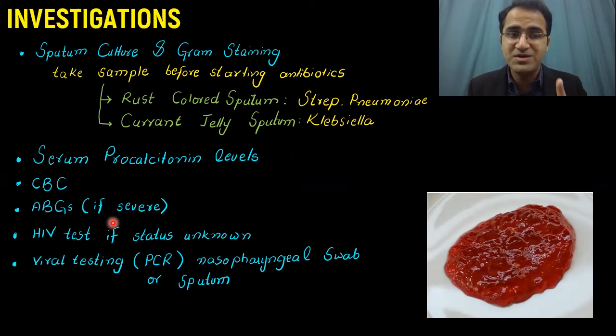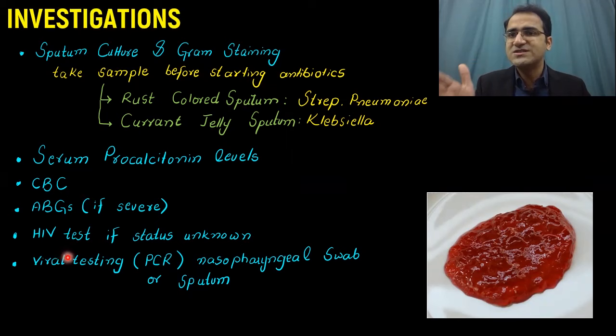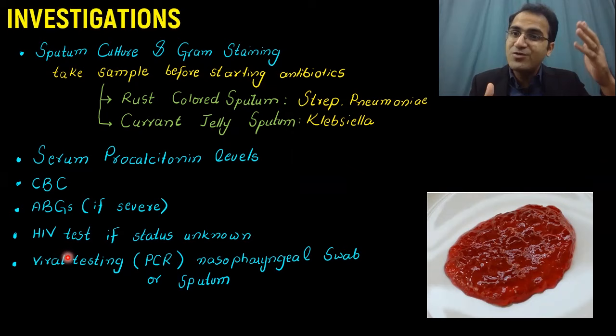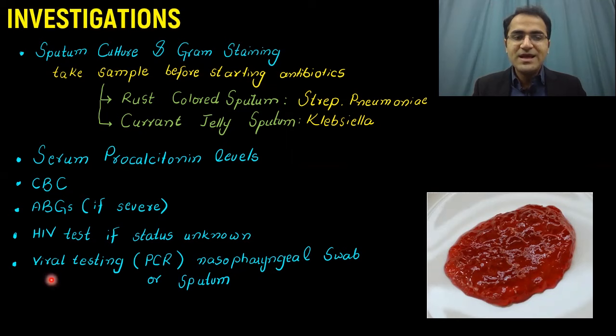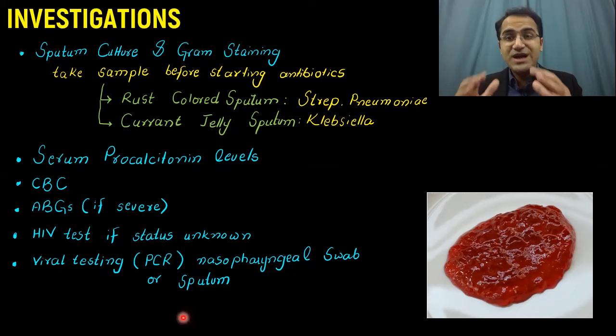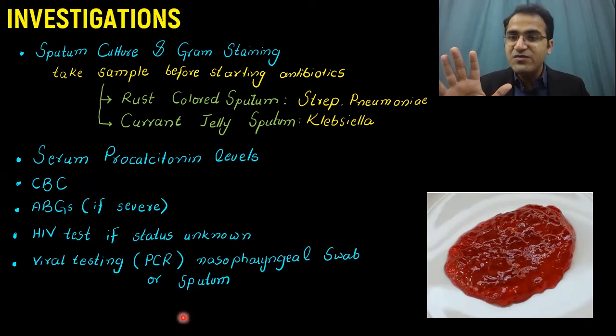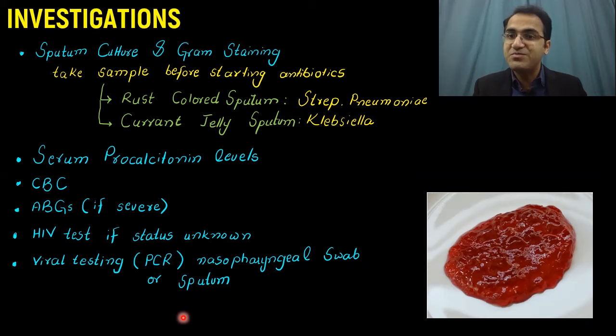If the patient's HIV status is unknown, you should also test for HIV, as some patients are undiagnosed HIV cases who have developed a CD4 count below 200 and are now presenting with opportunistic infections. You should not miss that. Viral testing by PCR of nasopharyngeal swab or sputum helps in the diagnosis of pneumonia. These days, COVID-19 is an important cause of pneumonia, so if you suspect patchy infiltrates and COVID-19 is epidemic in your area, you must go for COVID-19 PCR.